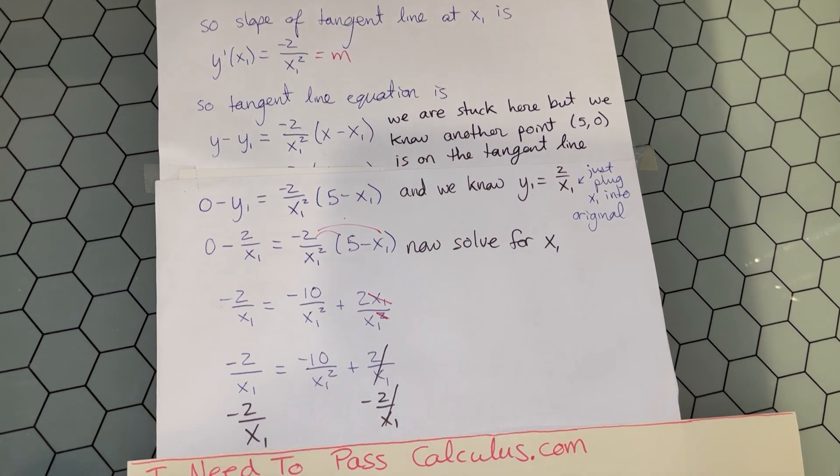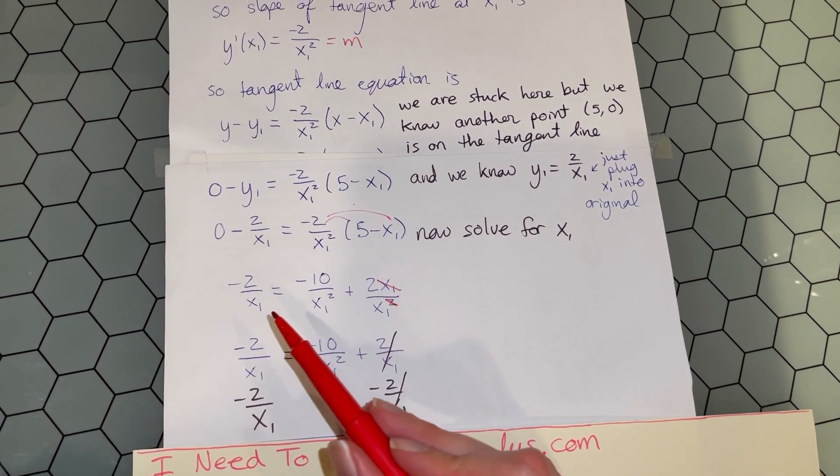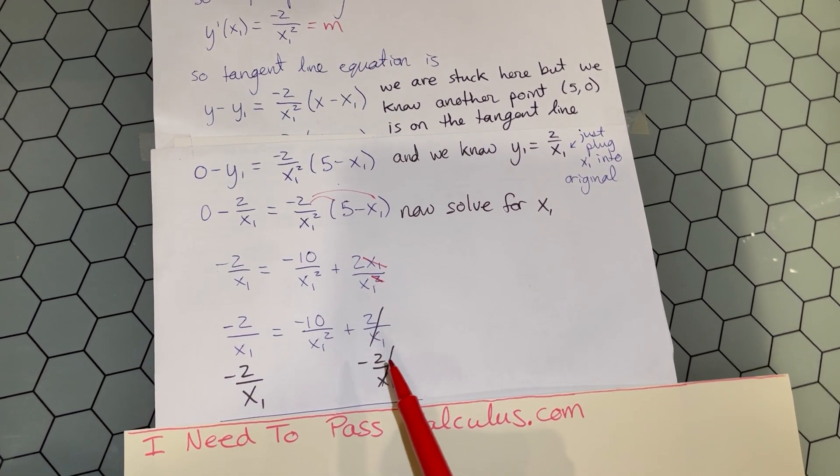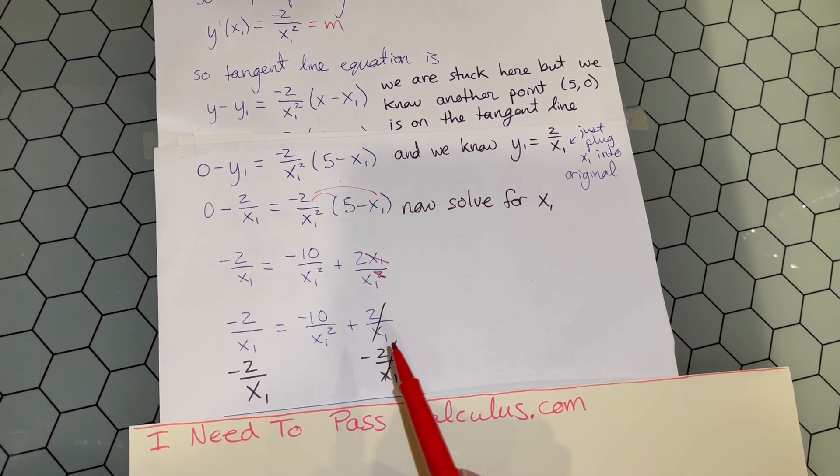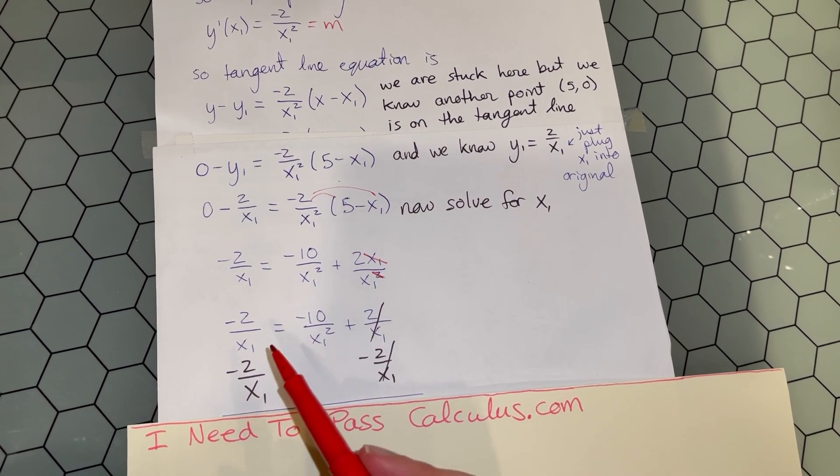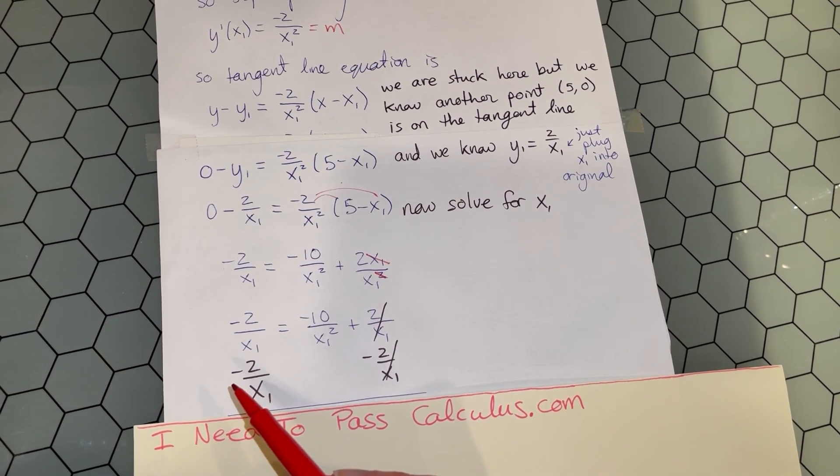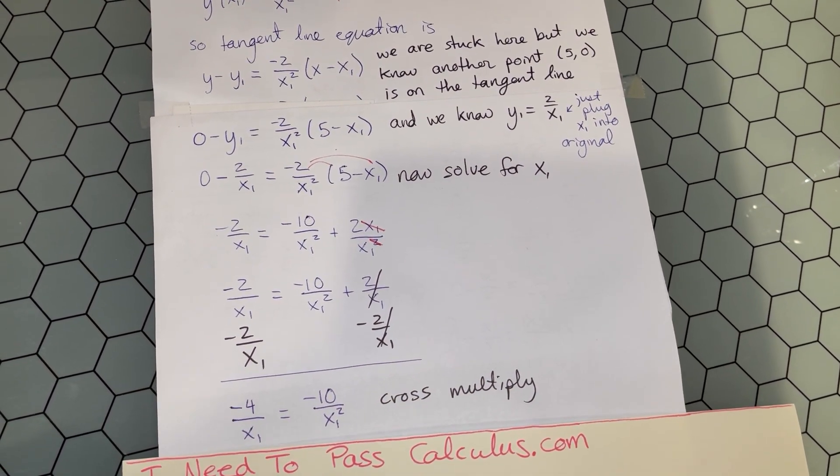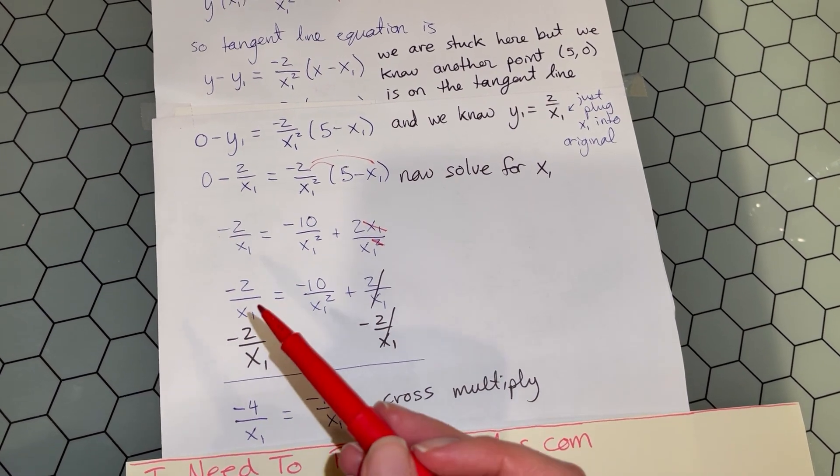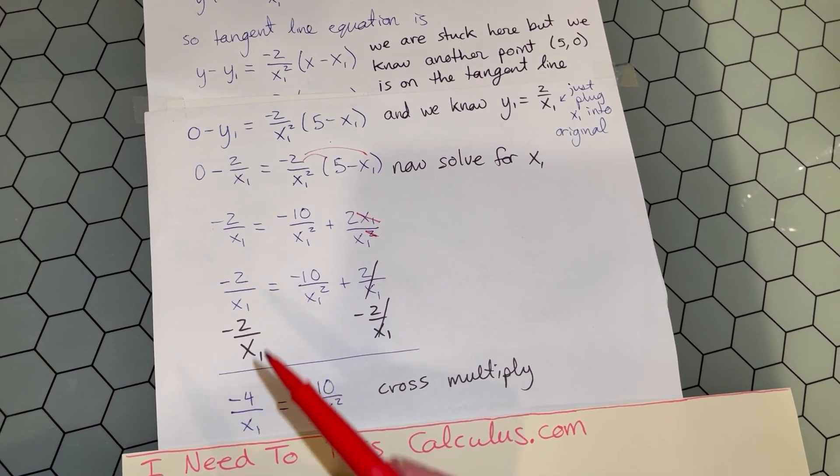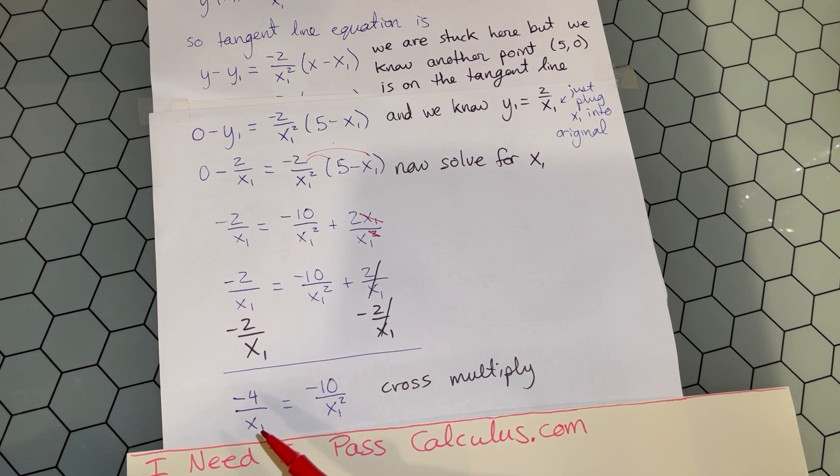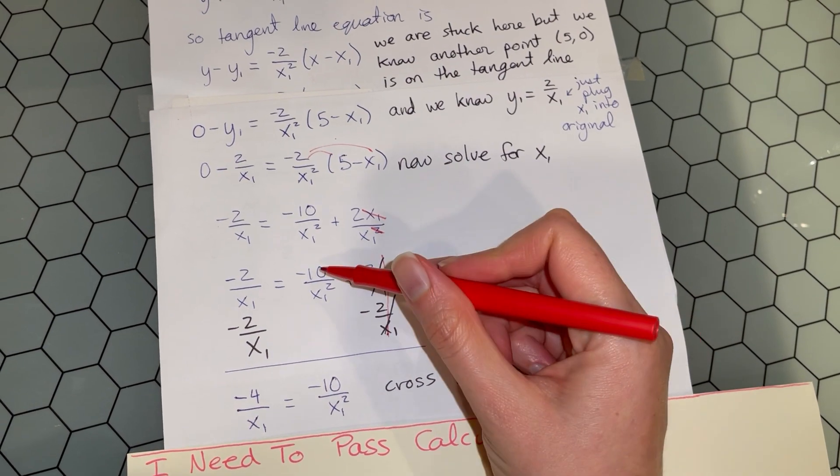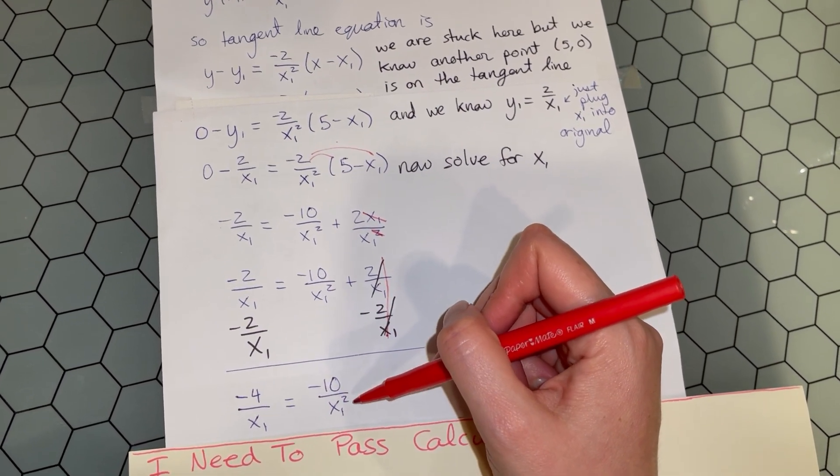We have 2/x₁ there. We can add that to the other side since it's a like term with -2/x₁ on the left. So -2/x₁ - 2/x₁ has the same common denominator. When adding fractions with the same denominator, you add the numerators. We get -4/x₁ on the left. On the right, we have -10/x₁².